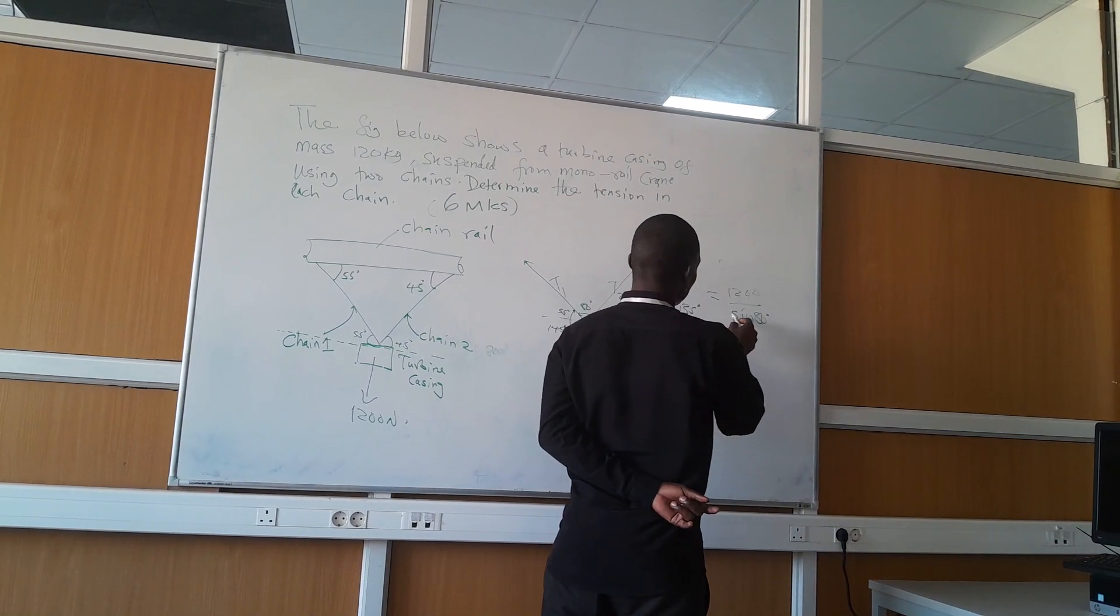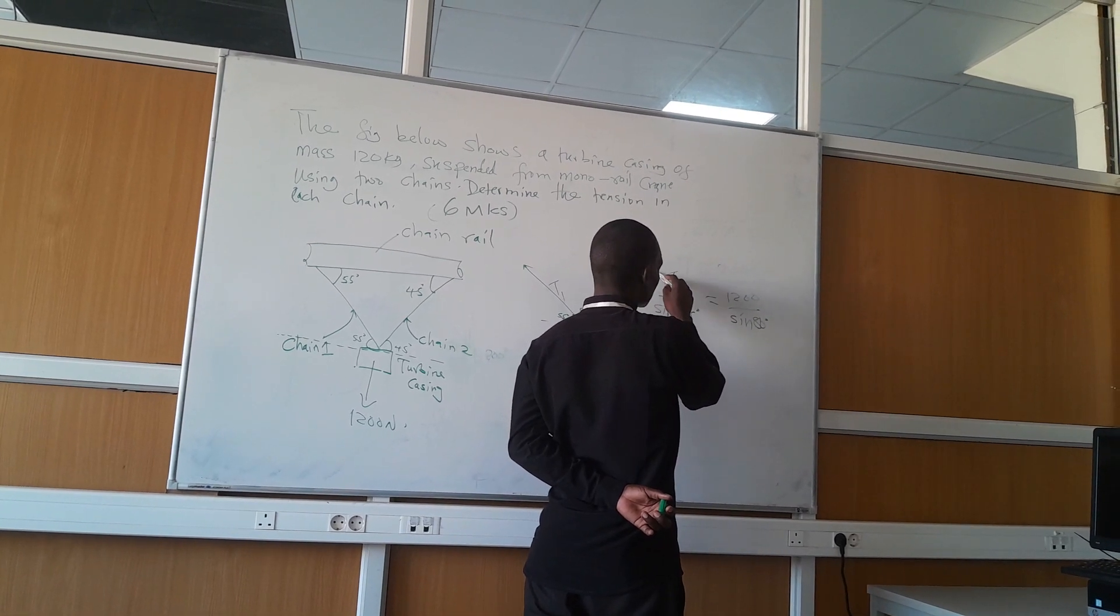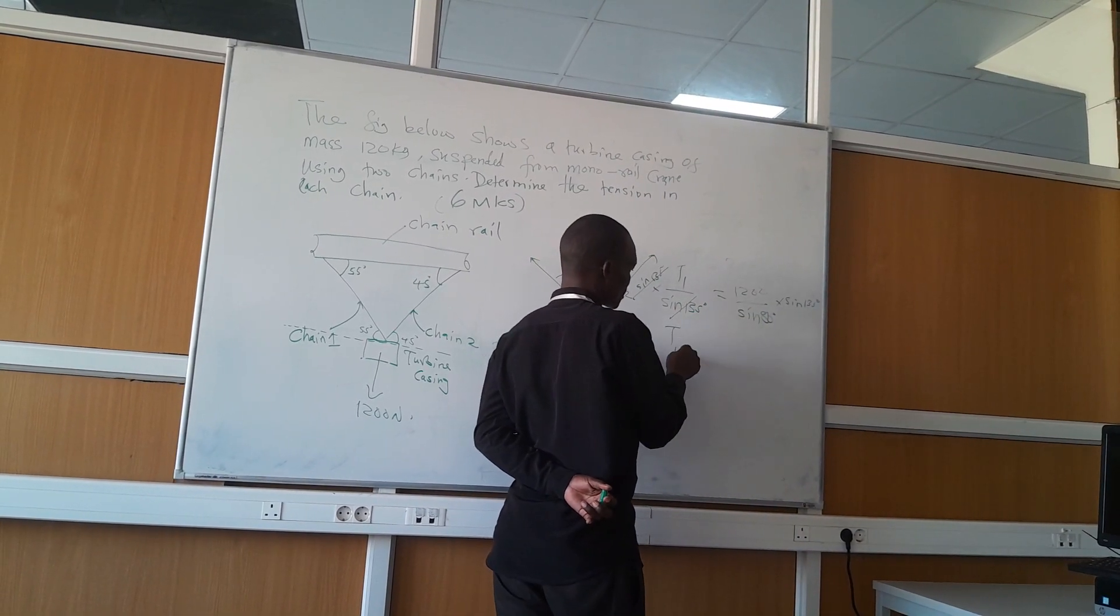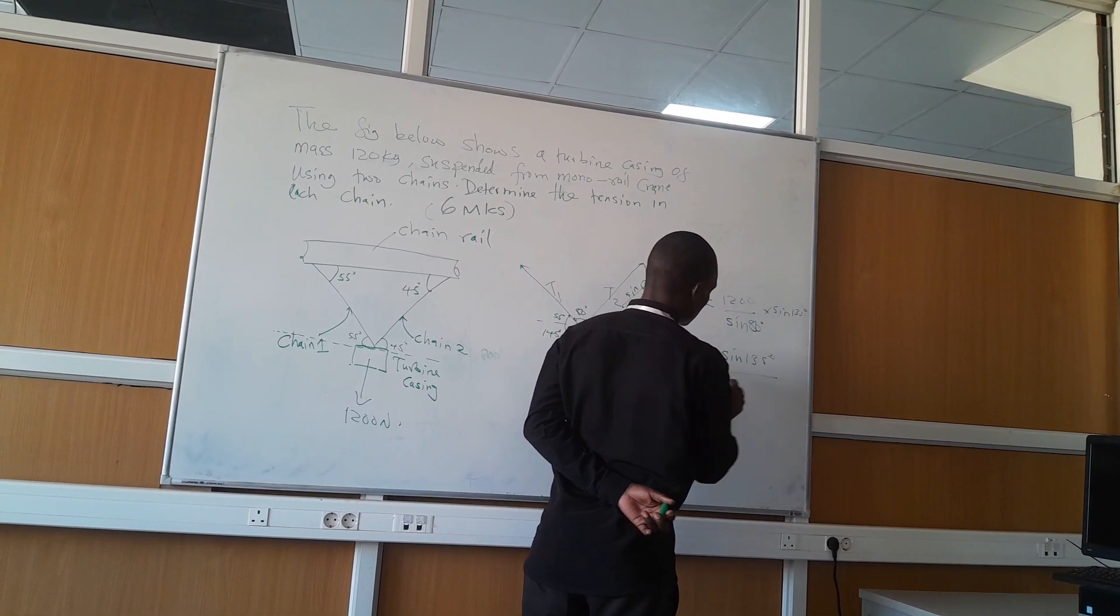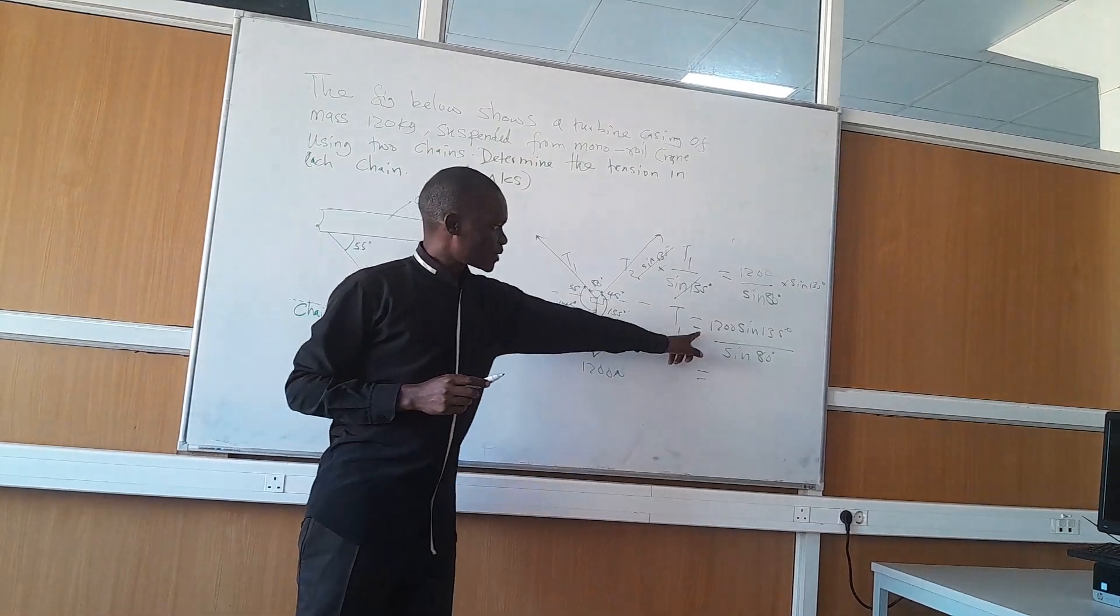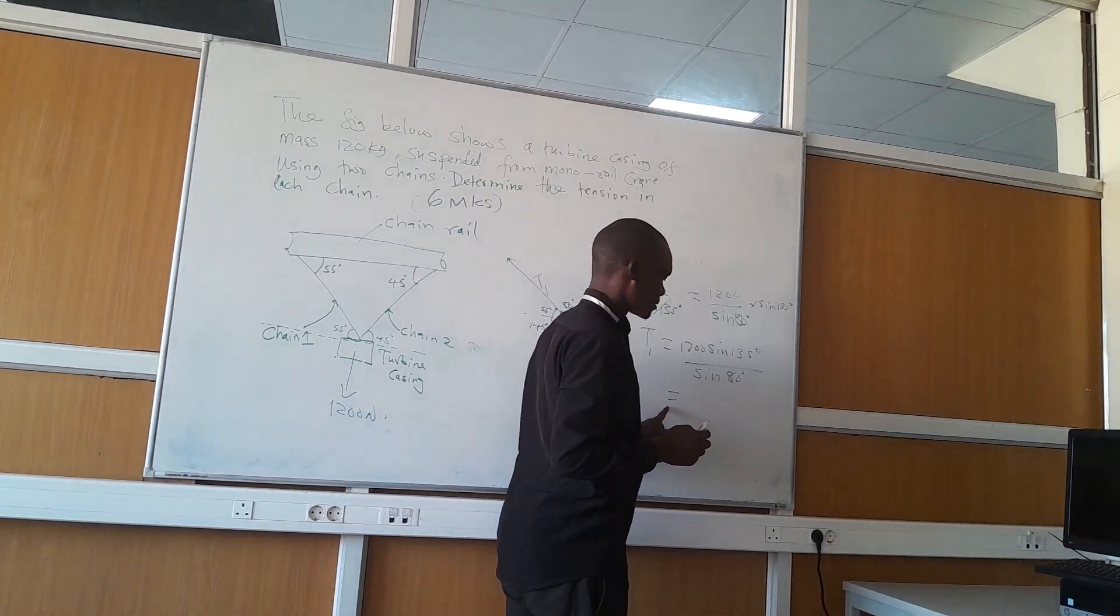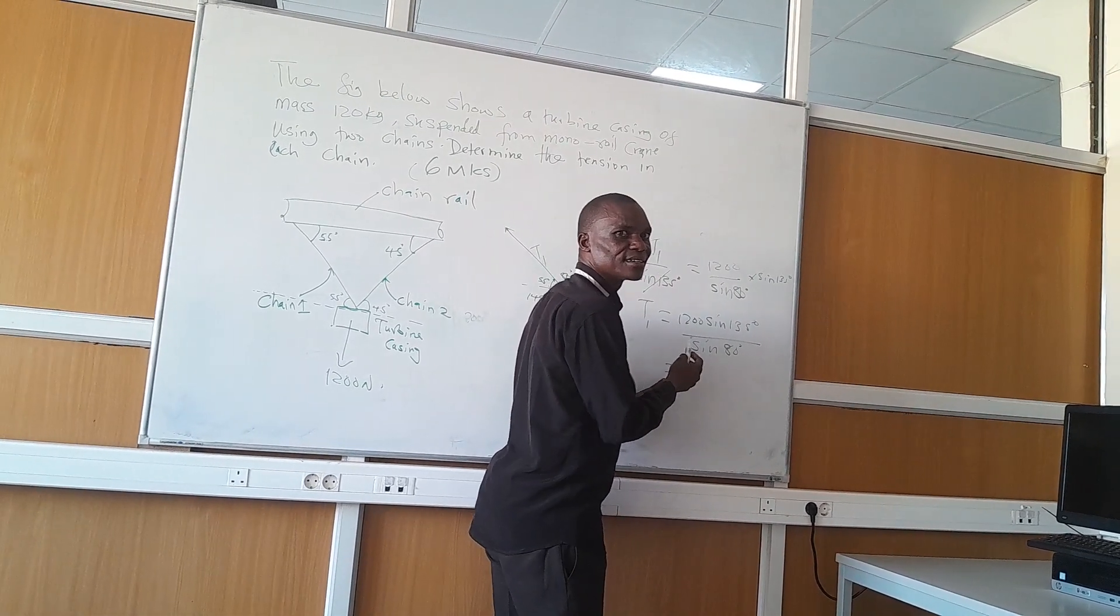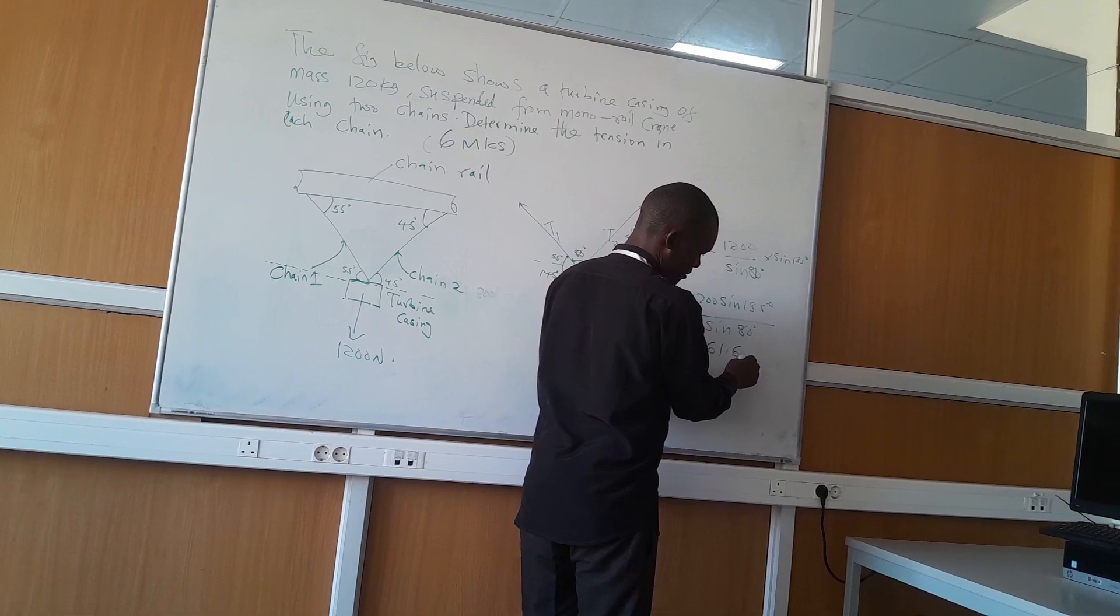Then you simply multiply both sides by sine 135 degrees. This one equals 1200 sine 135 over sine 80. You plug this one in your calculator. What do you get? 861.62 Newtons.